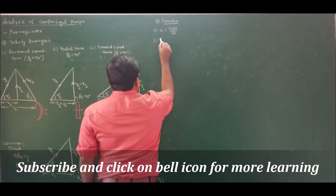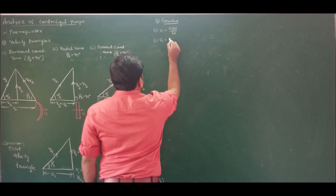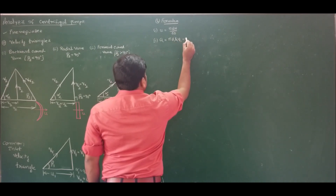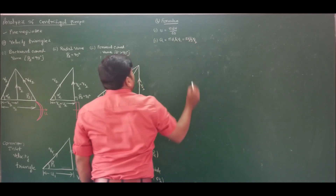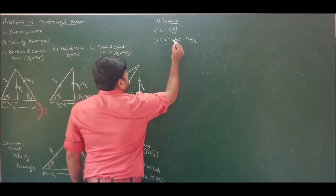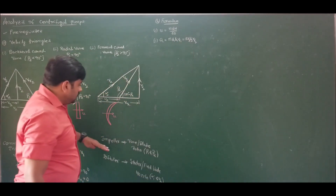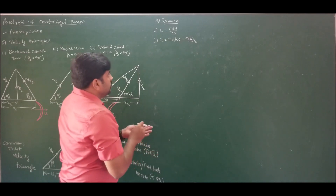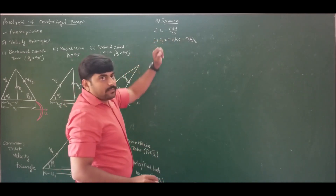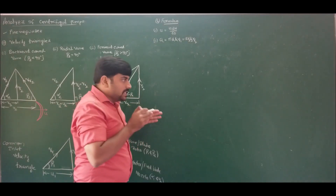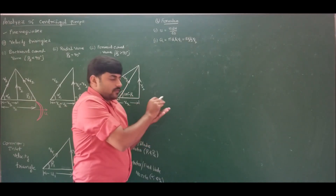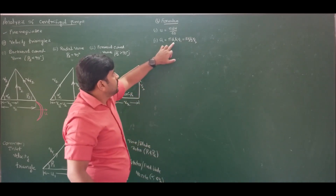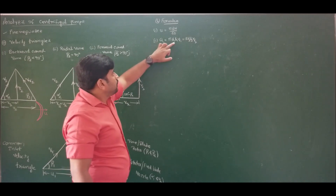Next, the formula for discharge Q equals π·D1·B1·Vf1, which also equals π·D2·B2·Vf2, where D1 and D2 are the impeller diameters at inlet and exit, and B1 and B2 are the width of the blade. We use circumferential area because water moves on the surface of the blade, not inside it. Therefore we use surface area, which is circumference times thickness, giving π·D·B. Also, if you know the pipe diameter, discharge equals π·ds²/4 times flow velocity at inlet, where ds is the suction pipe diameter — here we use cross-sectional area since water flows inside the pipe.